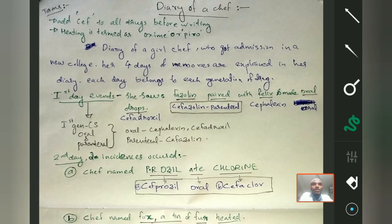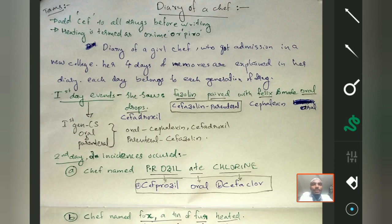Cephalosporins are classified into first, second, third, and fourth generations. All generations except the fourth have both oral and parenteral forms, but fourth generation contains only parenteral forms. This will also be derived from the mnemonic. The story follows the diary of a chef who went to college for admission, with each of the first four days representing a generation.